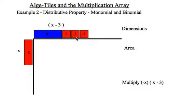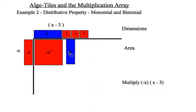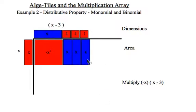There's my positive x and my 3 negative 1s. Multiplying negative x times positive x is negative x squared. Negative x times negative 1 is positive x. And again, I repeat that 3 times for all the different spaces and fill it in. Counting that up, I have a negative x squared plus 3 positive x's. So there's my result.